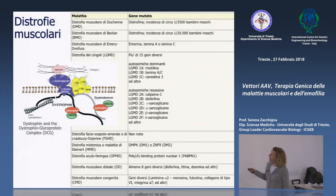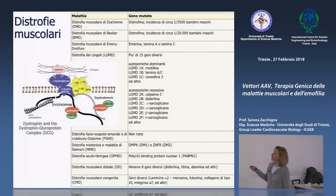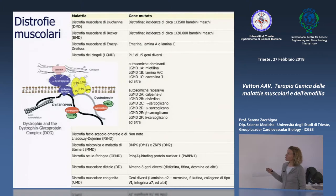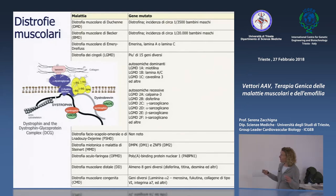Le forme principali sono la distrofia muscolare di Duchenne e quella di Becker, dovute a mutazioni della distrofina, che colpiscono solo bambini maschi perché il gene si trova sul cromosoma X. Esistono altre forme di distrofia più sito-specifiche, come la distrofia dei cingoli — in cui più di 15 geni sono implicati — e la distrofia facioscapolomerale.